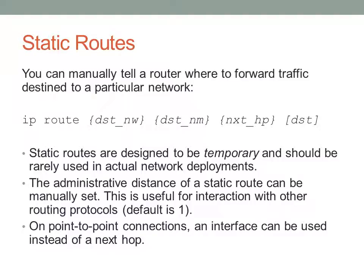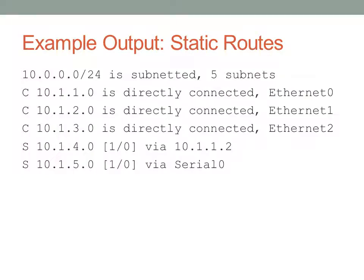On point-to-point connections, you can actually specify the next hop as an interface rather than an IP address, because on a point-to-point connection there are only two endpoints and only two IP addresses. So rather than having to worry about pointing it at the IP address configured on the other end, you can simply say forward the traffic across that link to whatever host happens to be on the other side. Here's an example of some static routes - I've added two static routes, one to 10.1.4 and another to 10.1.5. The first one points at a particular host, and the second one points at a serial interface, likely on a point-to-point connection.